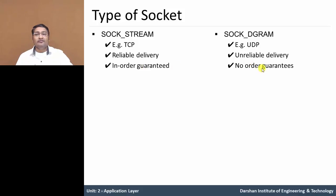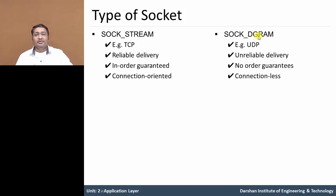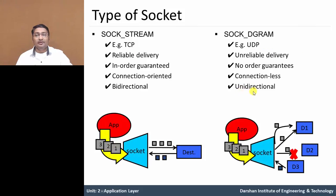TCP socket is connection-oriented, while SOCK_DGRAM or UDP socket is connectionless. SOCK_STREAM TCP socket is bidirectional, whereas SOCK_DGRAM UDP socket is unidirectional. As seen in the figure, TCP socket is bidirectional and delivers data in order. UDP socket is unidirectional, connectionless, and provides unreliable delivery — meaning data loss may occur.